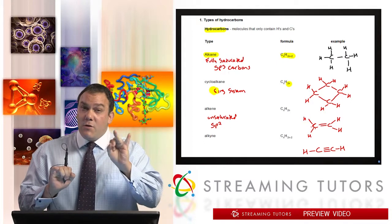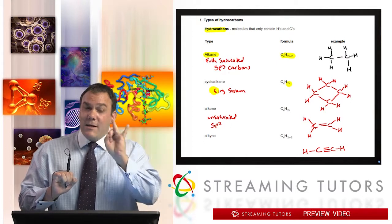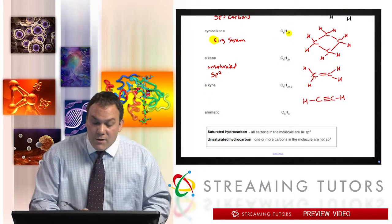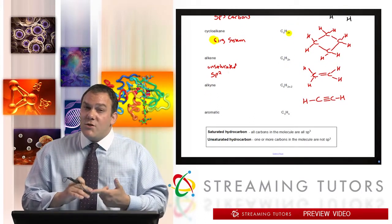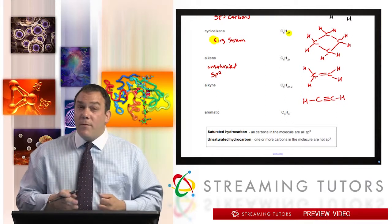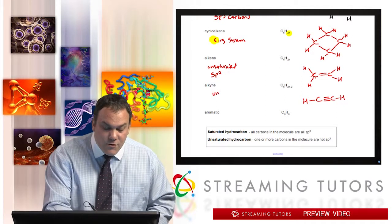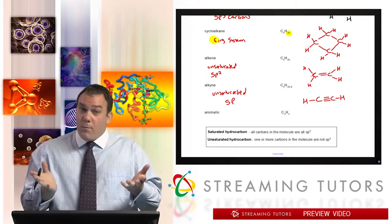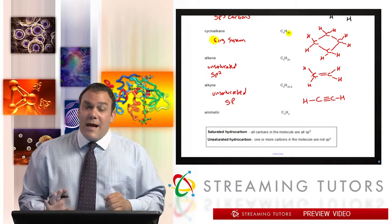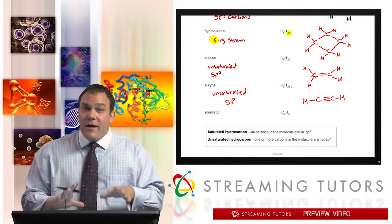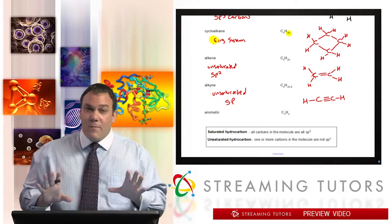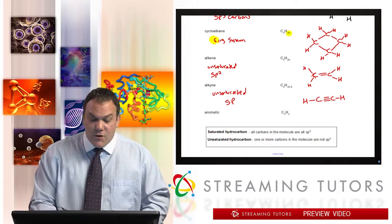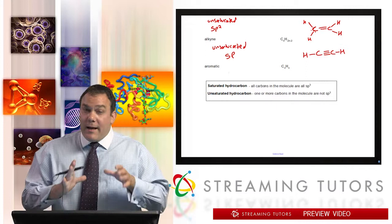If you want an alkyne, you have another two less, that's two H's. So here we have two H's, so two times two is four minus two is two, and that's the formula. This is also unsaturated because this has an sp carbon, one or more sp carbon, it's unsaturated. The only way it's saturated is if it's all sp3 carbons.